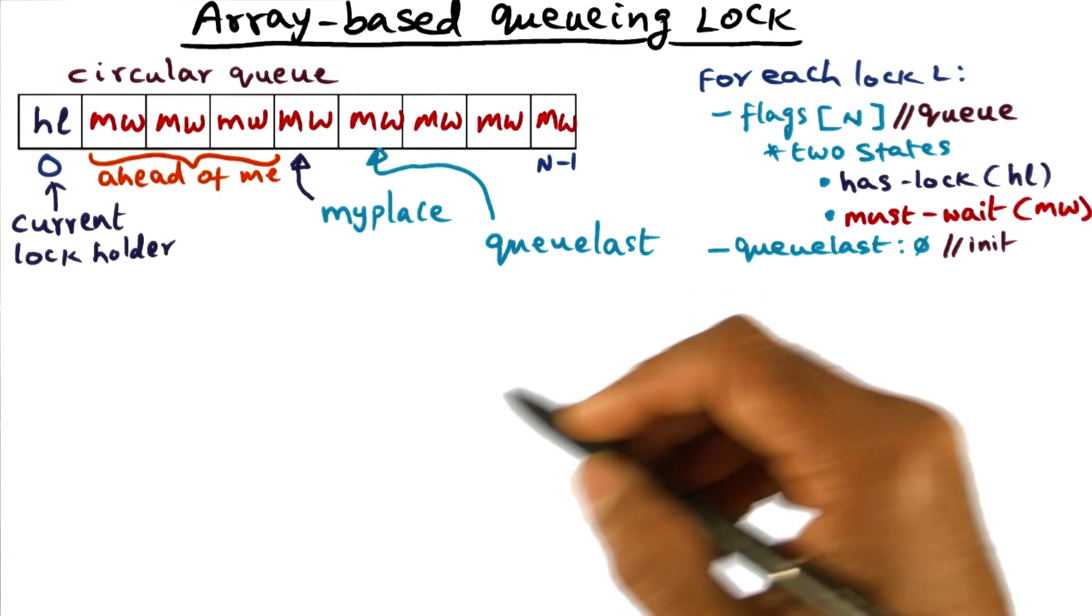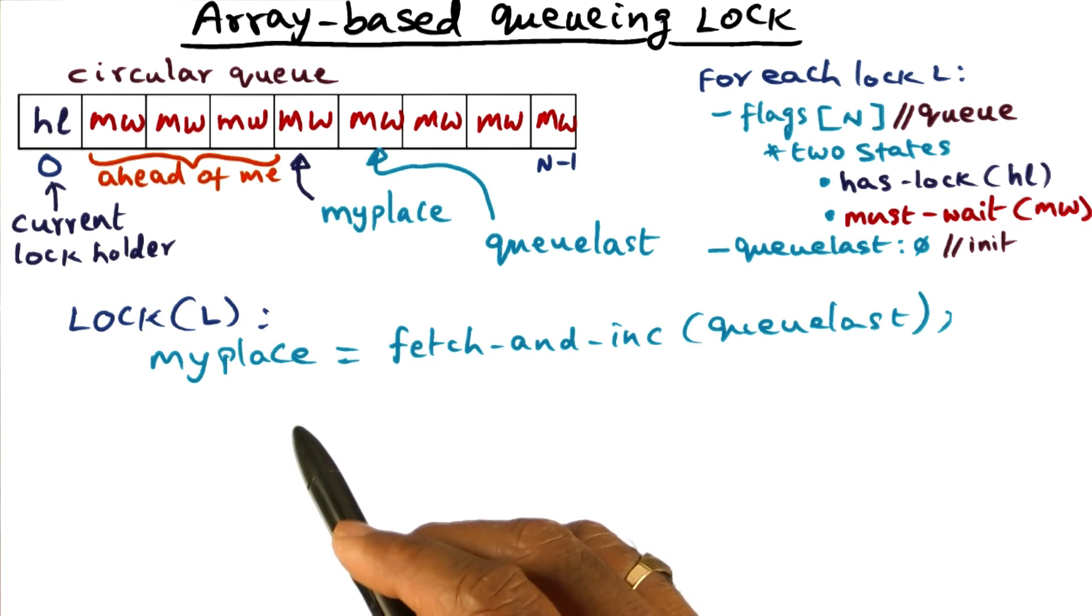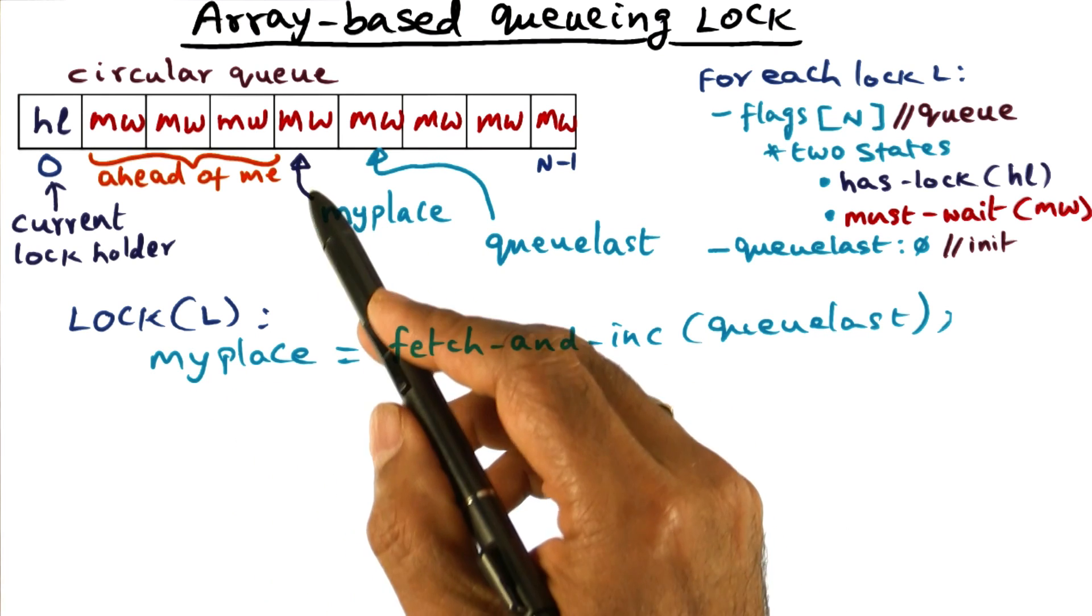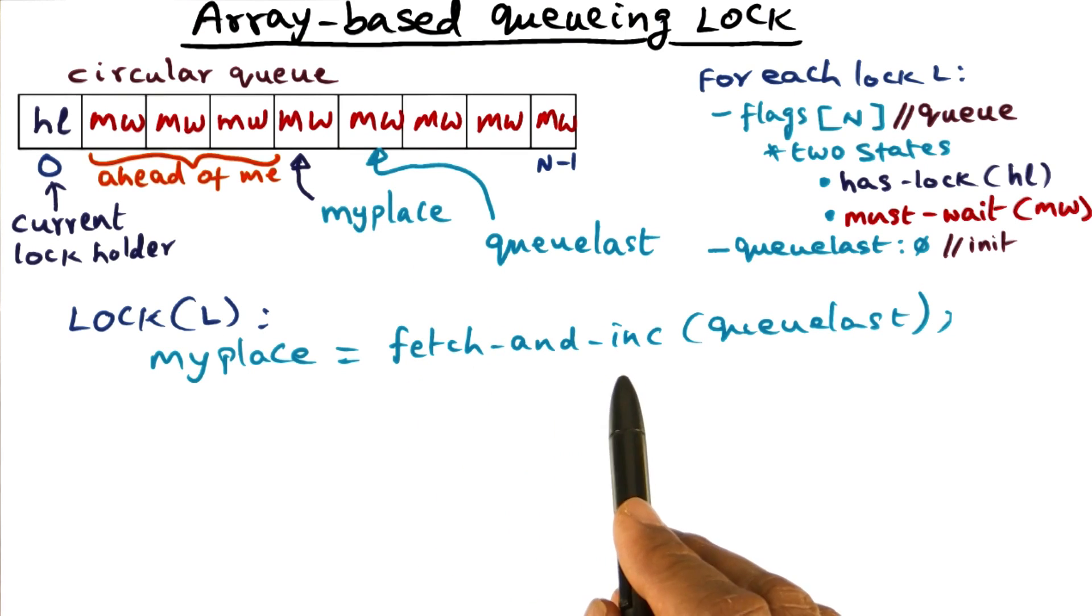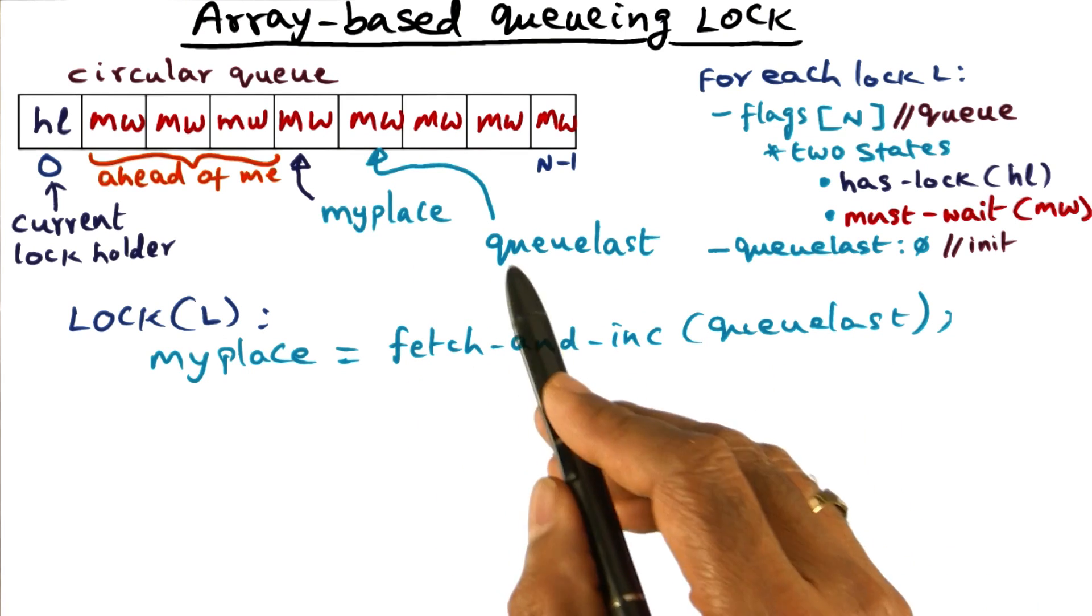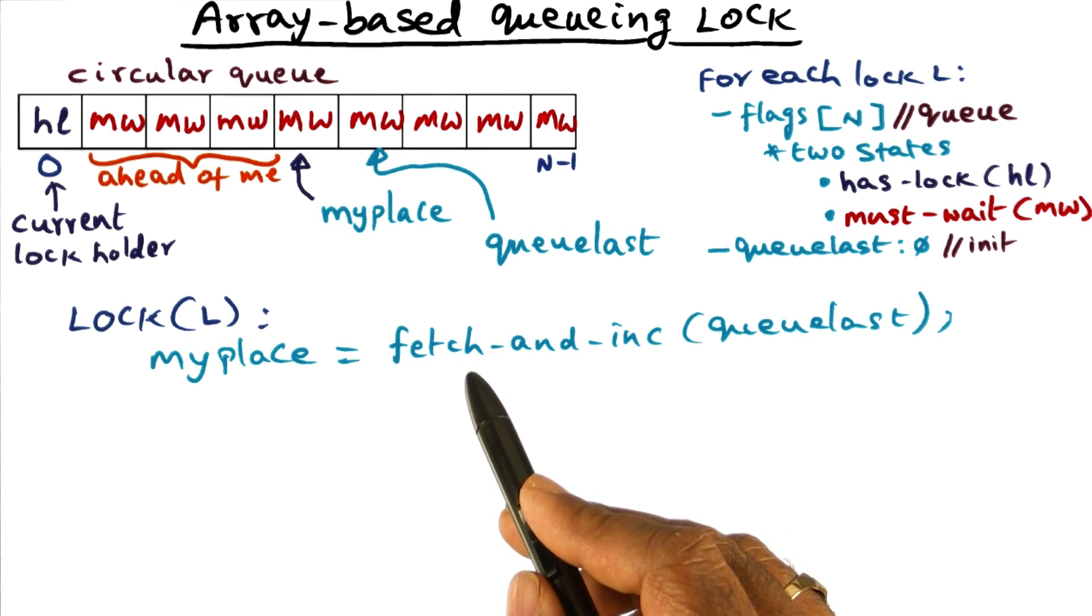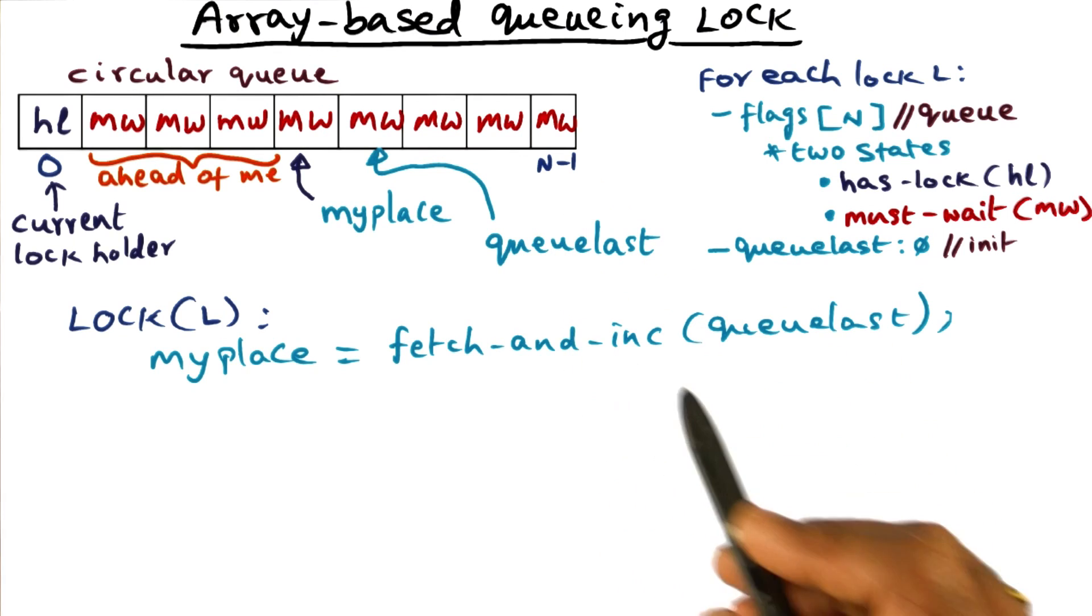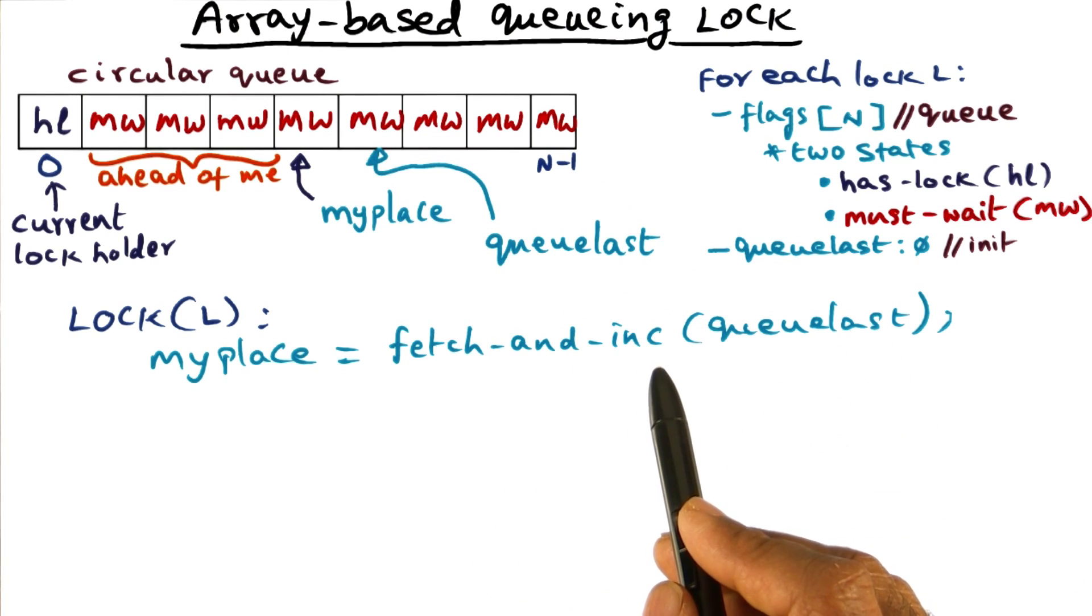So now I can tell you how the lock algorithm is going to look like, pretty simple. When I make a lock request, what I'm going to do is mark my place in this flags array. And the way I do that is by calling fetch an increment on the queue last variable. And that ensures that I get my unique spot due to the fetch operation, and I increment the queue last to point to the next spot that's available for the future requesters.